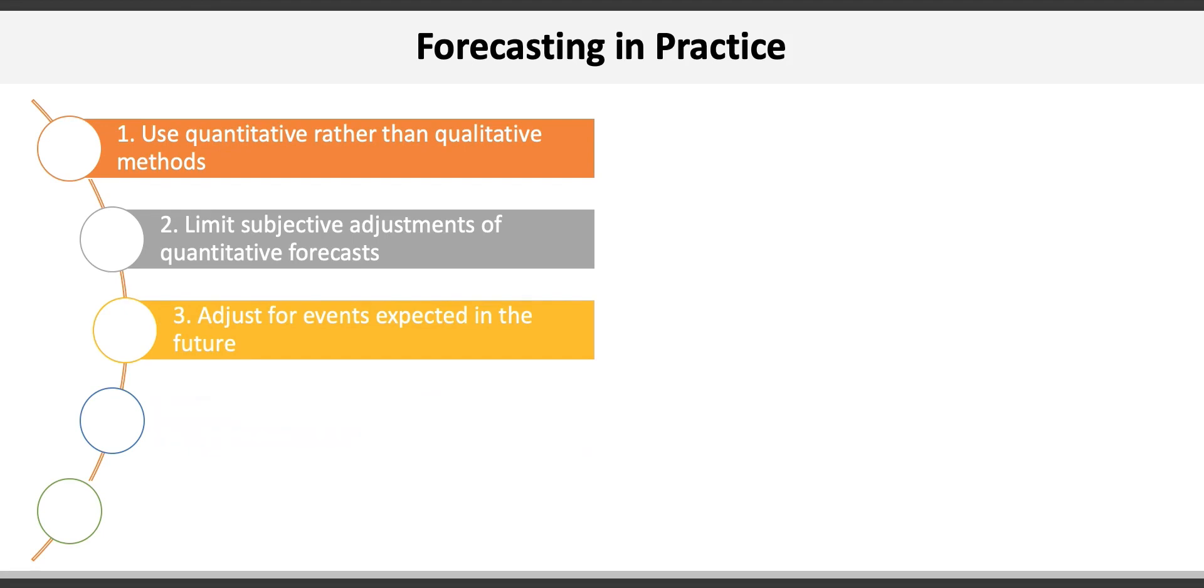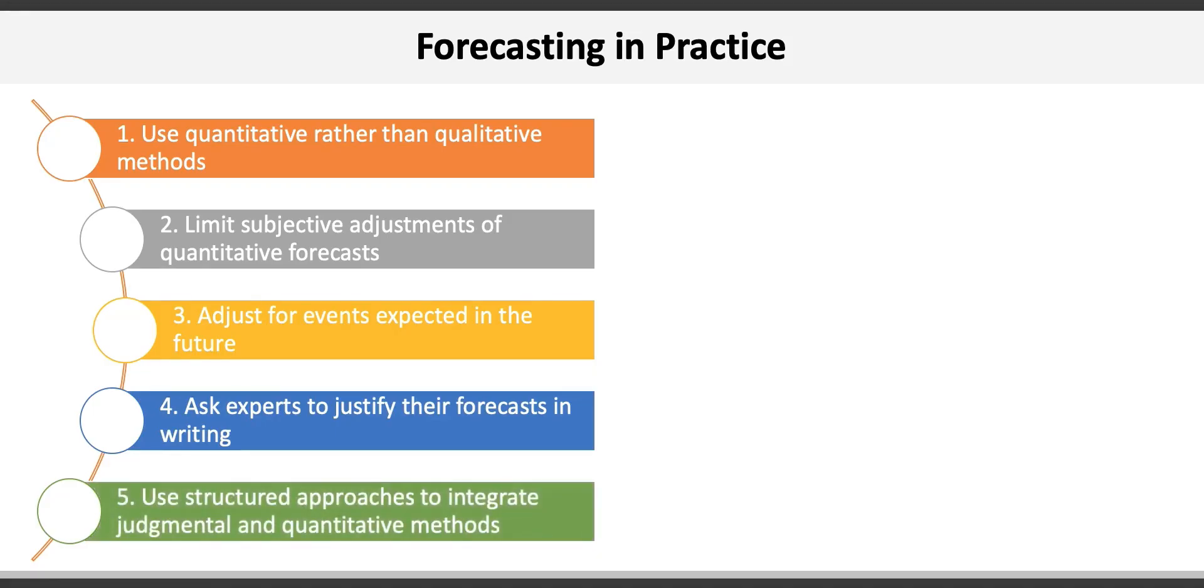Fourth is to ask experts to justify their forecasts in writing, so we have a record of the rationale provided. Humans are inherently forgetful, and we need to record our assumptions so we can determine if they were valid. Fifth is to use structured approaches to integrate judgmental and quantitative forecasts. This ensures we don't randomly come up with ways to integrate methods, and makes the approach repeatable in the future.